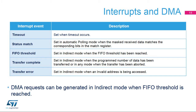The Quad SPI memory interface has five interrupt sources: timeout; status match, when the masked received data matches the corresponding bits in the match register in automatic polling mode; FIFO threshold; transfer complete; and transfer error. DMA requests can be generated in indirect mode when the FIFO threshold is reached.